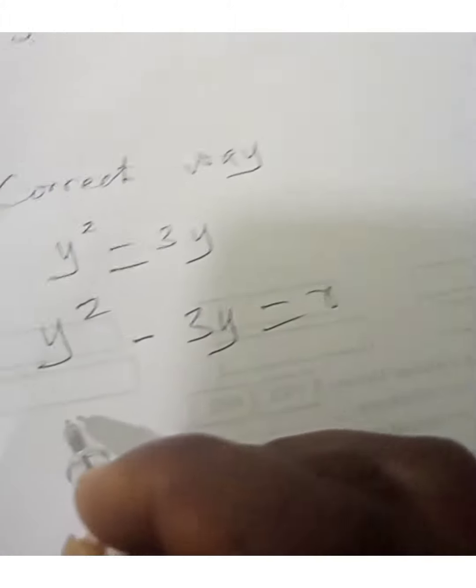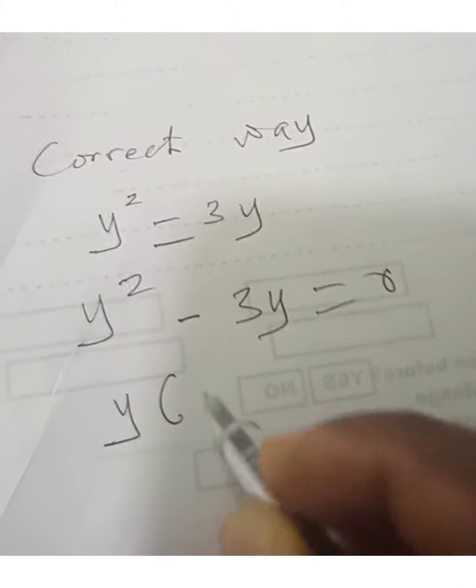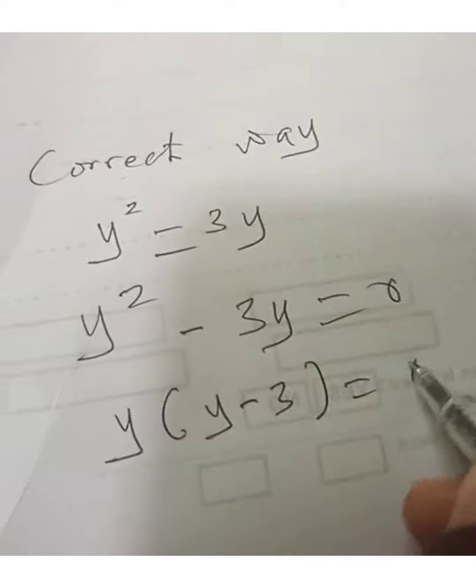So we factorize, we're going to have y times y minus 3 equals 0.